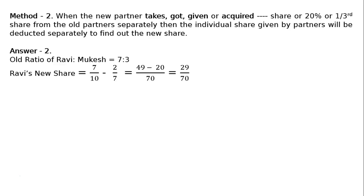Ravi's new share: it was 7/10, his original old share, minus 2/7th, that is equal to 49 minus 20 upon 70. LCM is 70, that is 29/70. Ravi 29 upon 70.